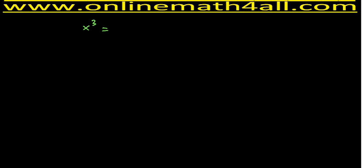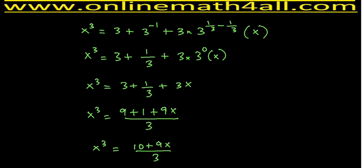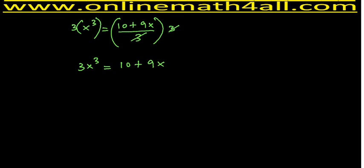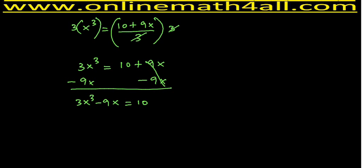We have x³ equals (10 + 9x) over 3. To get rid of the denominator, I multiply both sides by 3: 3x³ equals 10 + 9x. The target of the question is to find 3x³ minus 9x, so I take 9x to the other side — positive 9x and negative 9x cancel — giving 3x³ minus 9x equals 10. So the value of 3x³ minus 9x is 10.